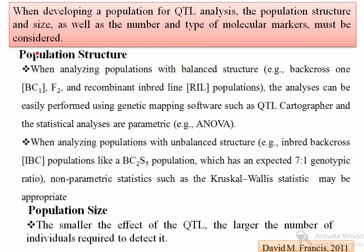When developing a population for QTL analysis, two things must be considered: population structure and size, as well as the number and type of molecular markers. For balanced structure populations such as simple backcross, F2, or RIL populations, analysis can be easily performed using genetic software such as QTL Cartographer using parametric statistics. For unbalanced structure populations like advanced backcross populations (e.g., BC2S5), non-parametric statistics such as the Kruskal-Wallis test are used.